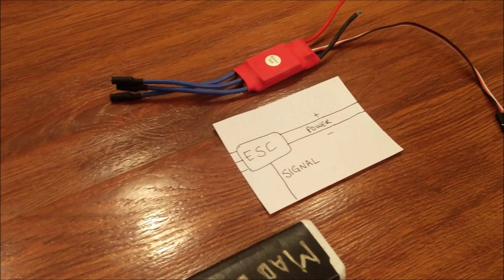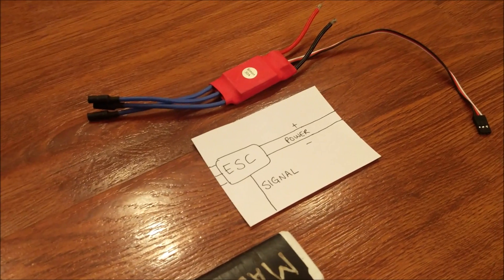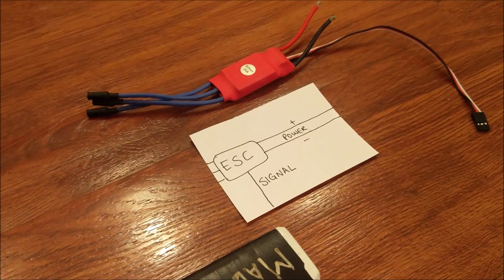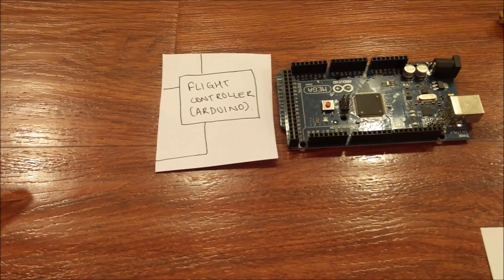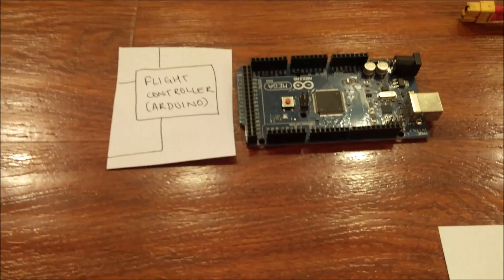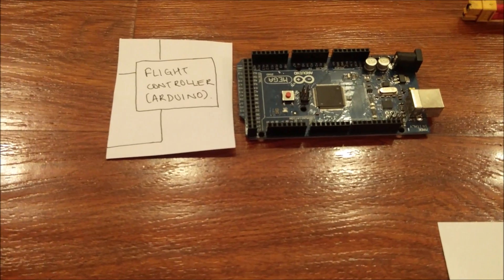Now how does the whole drone make decisions on which propellers to keep at what speed to produce ample thrust? Well, that's where the flight controller board comes in. This flight controller board is an Arduino in our case. We're making our own and we're not buying one.